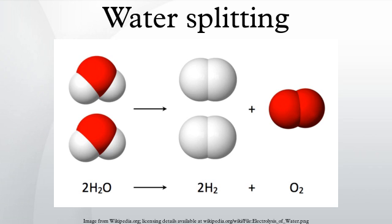The high temperatures necessary to split water can be achieved through the use of concentrating solar power. Hydrosol II is a 100-kilowatt pilot plant at the Plataforma Solar de Almería in Spain, which uses sunlight to obtain the required 800–1200 degrees Celsius to split water. Hydrosol II has been in operation since 2008. The design of this 100-kilowatt pilot plant is based on a modular concept, and it may be possible to scale up to the megawatt range by multiplying reactor units and connecting the plant to heliostat fields of a suitable size.